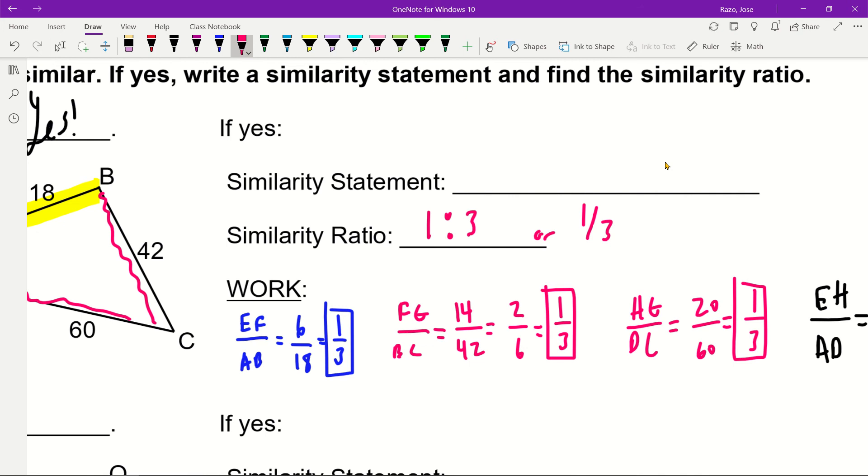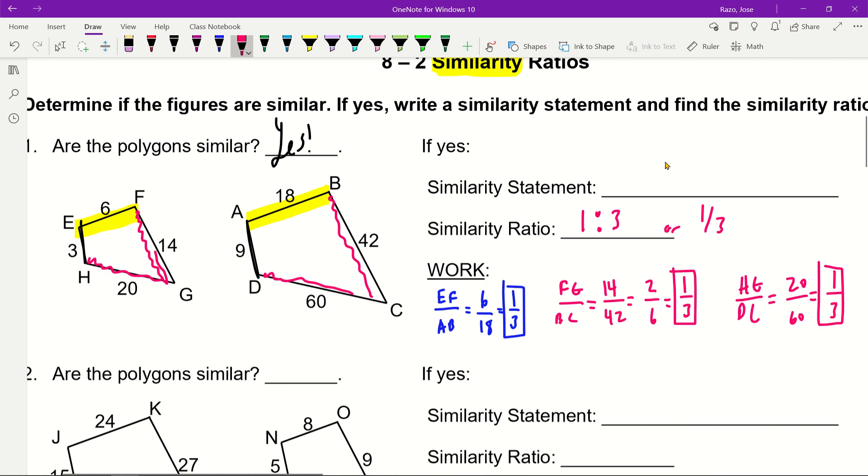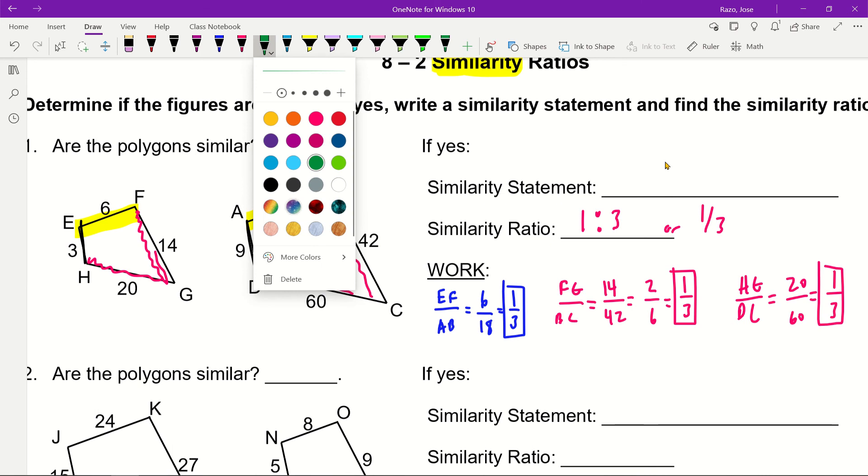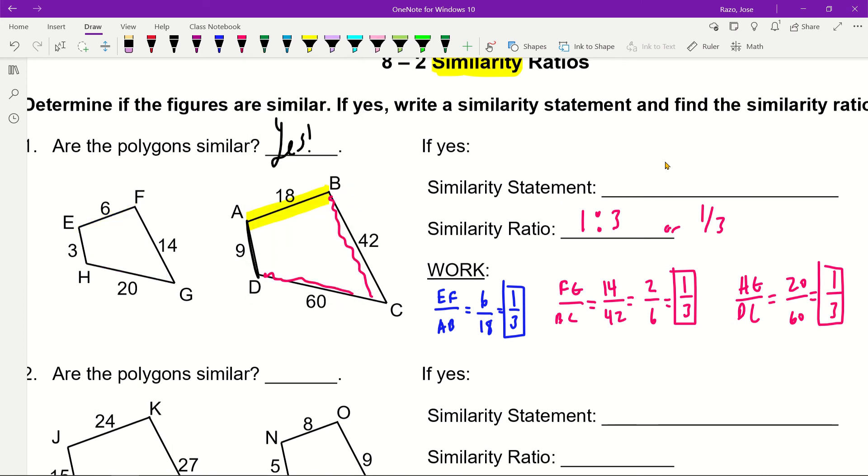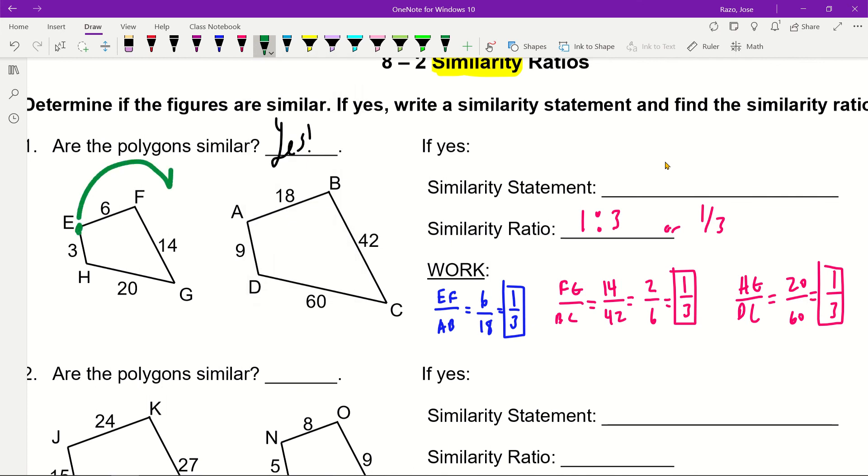The similarity statement puts it in order. Whatever point you start at, I'm going to start at E and work my way around this way. I'm going to start at A and work around this way. These have to match up with whatever letters over here.